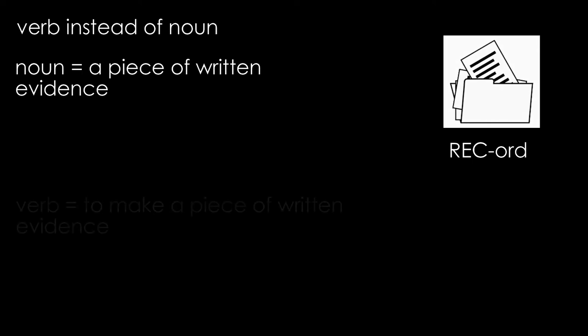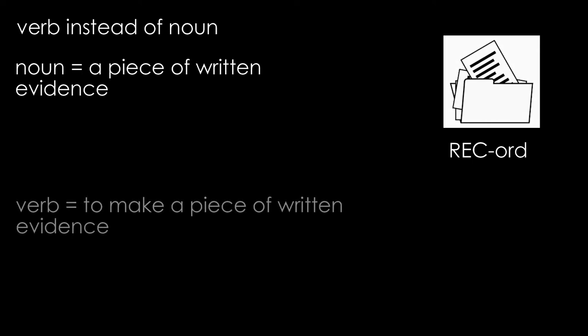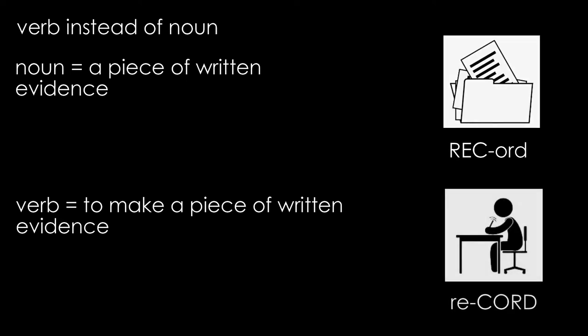When we use the verb form of the word, meaning to make a piece of evidence such as a written account, we say 'record.' Listen to them one after the other and hear the difference: 'record' — 'record.' The two words are identical; the only thing that changes is where the stress is placed.